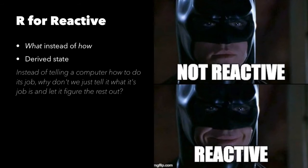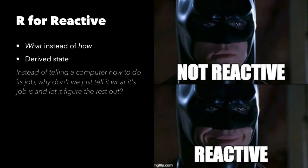R is for reactive. Reactive programming makes Batman happy. Reactive programming is specifying what you want the program to do, instead of exactly the steps of how to do it. There's a quote from the Reactive Cocoa philosophy page: 'Instead of telling a computer how to do its job, why don't we just tell it what its job is, and let it figure the rest out.' Think of reactive programming like a spreadsheet - you've got cells with rules specifying their value, and they automatically update. A reactive programming framework like Reactive Cocoa does that work for you.